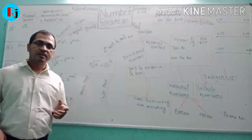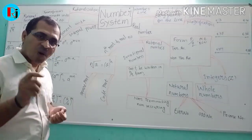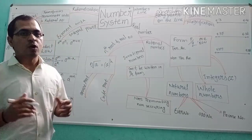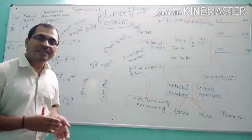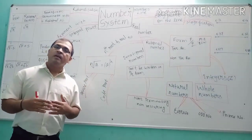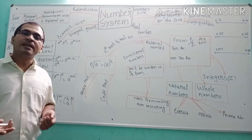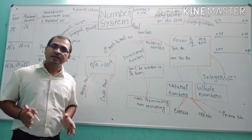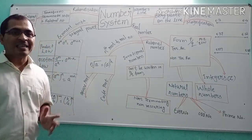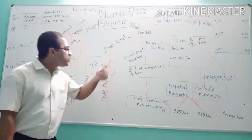Generally, number systems are categorized into two ways: complex numbers and real numbers. Here we are not going to deal with complex numbers because at a basic level we deal with real numbers only. When you pass standard 10 and take mathematics as a stream subject, there will be chapters on complex numbers. So we are going to deal with the number system of real numbers.